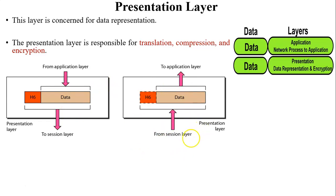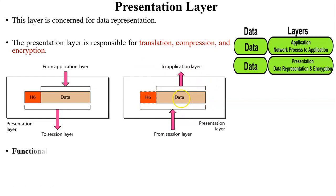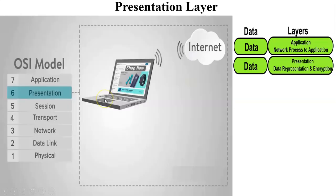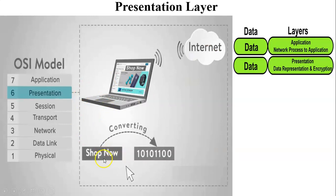At the receiver end, when data comes from the session layer, the presentation layer header is removed. The header contains translation, compression, and encryption algorithms. At the receiver side, data is converted from machine language back to human language, decompressed, and decrypted. The functionalities of the presentation layer are translation, encryption, and compression. In the animation, you can see data is translated, then encrypted, and then sent to the receiver side.